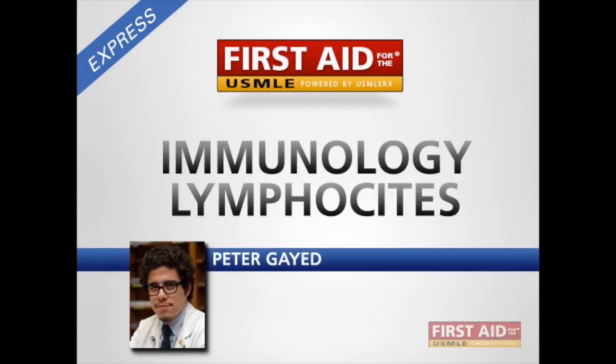Hello again, this is Peter Gade with the USMLE RX Step 1 Express team, and today we're going to start with immunology. Specifically we'll be talking about lymphocytes, which are the T and B cells, or the adaptive cells of the immune system.